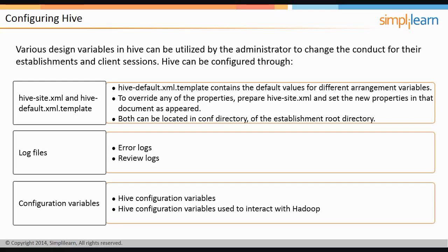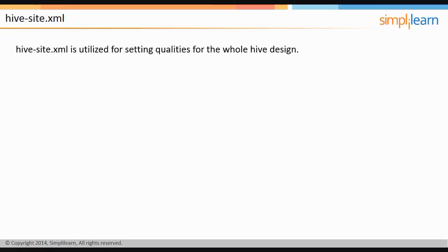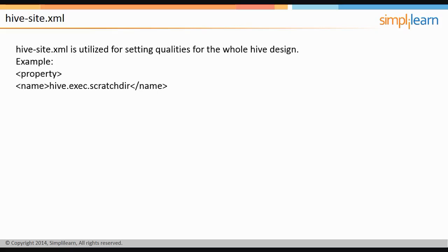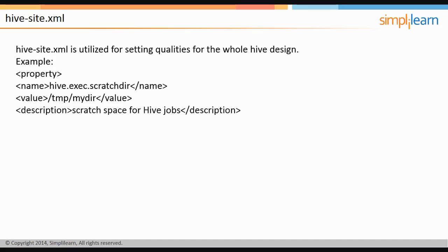The hive-site.xml is used for setting values for the whole Hive configuration. For example: property name hive.exec.scratchdir, value /tmp/my_directory, description 'scratch space for Hive jobs'.